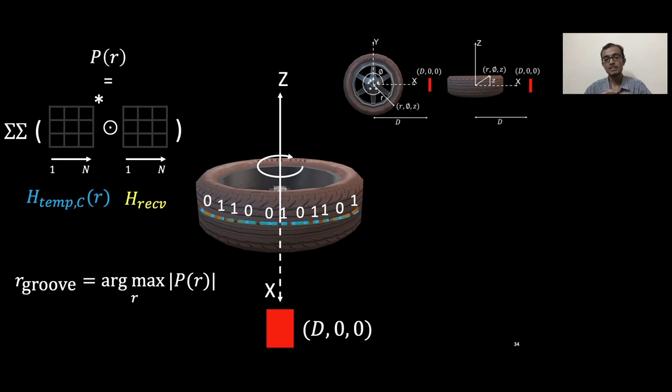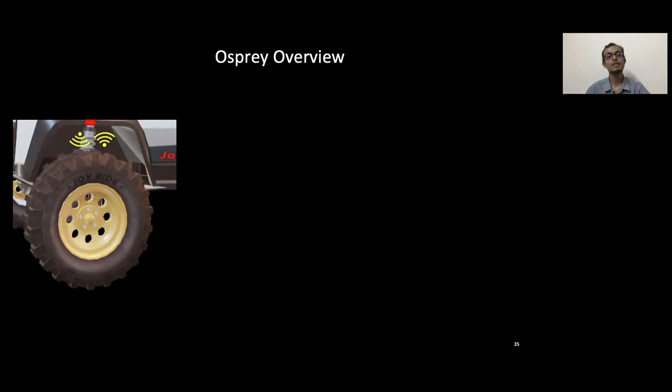Now finally coming to the decoding step, this is exactly similar to the surface imaging wherein we construct an h temp c, which is the h temp c matrix corresponding to the code. We vary it across the radii values, and similarly we do a summation across a dot product across different elements and sum it over. The maximum correlation point indicates where our radius for the groove lies.